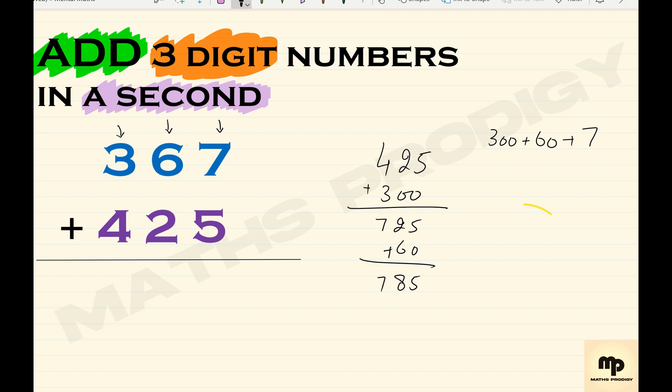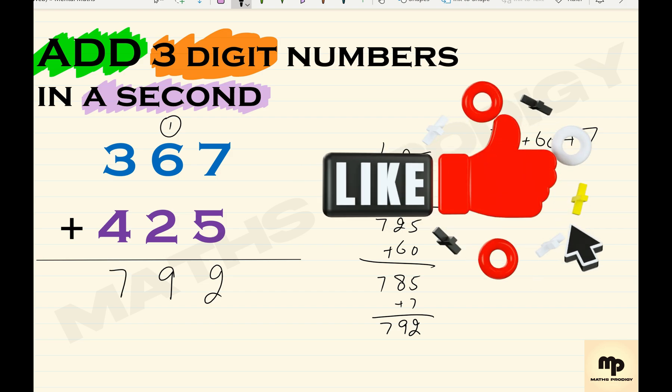Then at last, add 7, that's so easy, 792. So here you go. If you check your answer by adding them, that will be 2, 9, and 7. Here you go, that's the simple way to add three-digit numbers in a second.